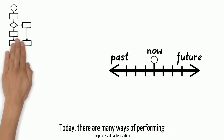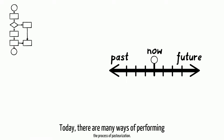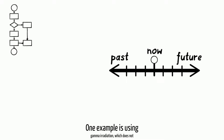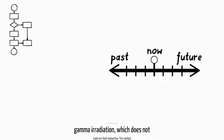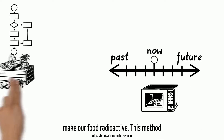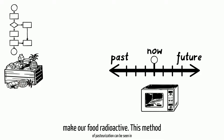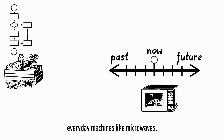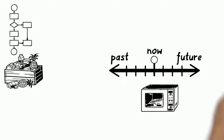Today, there are many ways of performing the process of pasteurization. One example is using gamma irradiation, which does not make our food radioactive. This method of pasteurization can be seen in everyday machines like microwaves.